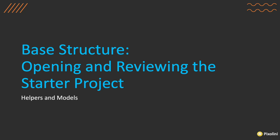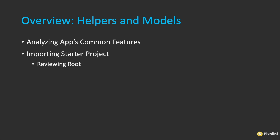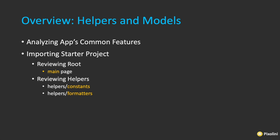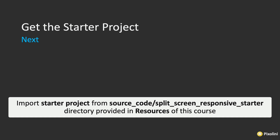Now it's time to open and review the startup project. We're going to take a look at the helpers and the models — get an overview of the helpers and models, analyze the application's common features. We're going to import the startup project and review in the root the main page, the helpers (which will be the constants, the formatters, the navigation transition, the themes), and the models — we're going to have the user model. The startup project is available in your resources section of this course — look under the source code for the split-screen responsive starter project.